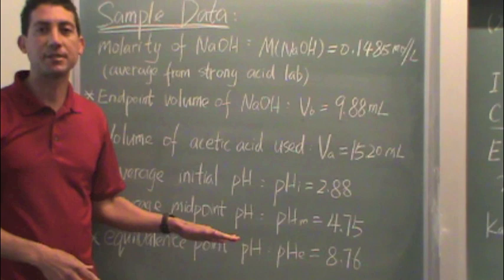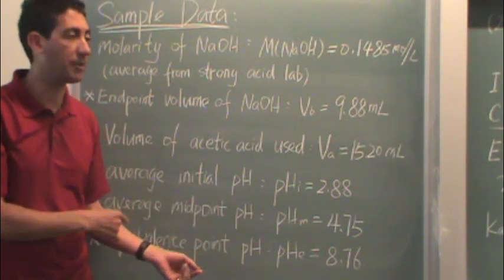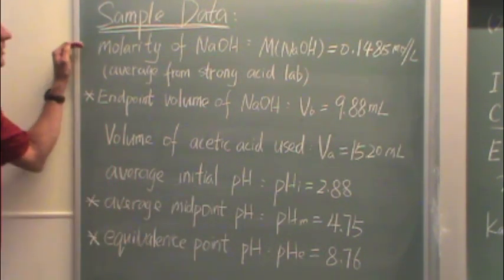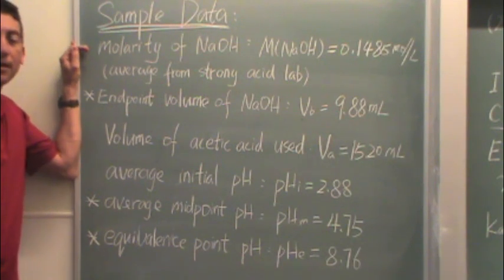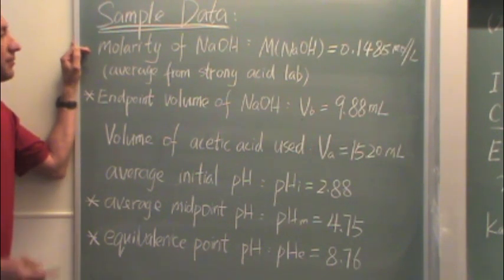Make sure you write down some of these data so when we go through the sample calculation, you'll know where these numbers come from. So what you'll need is the molarity of the sodium hydroxide. This is from the last lab. And make sure that's the average from the last lab.